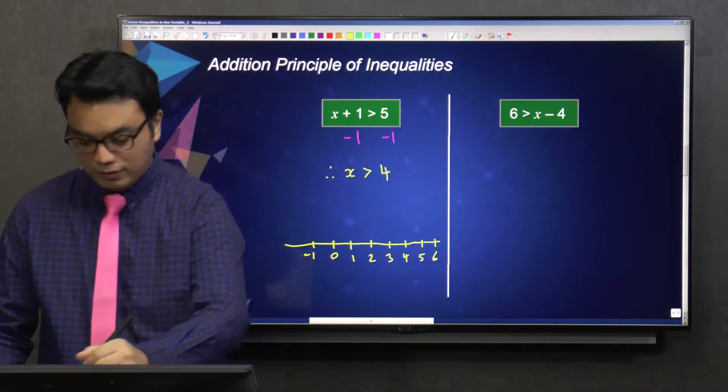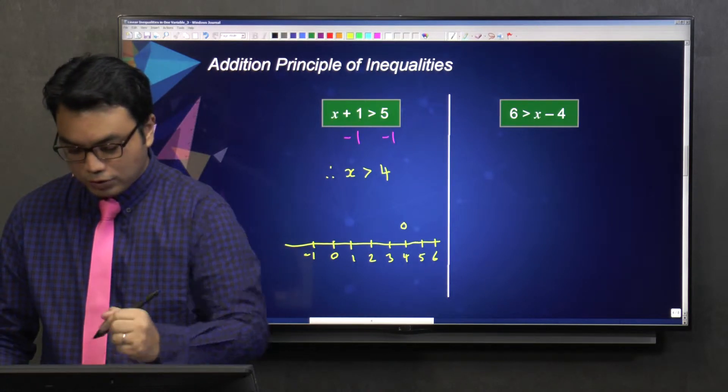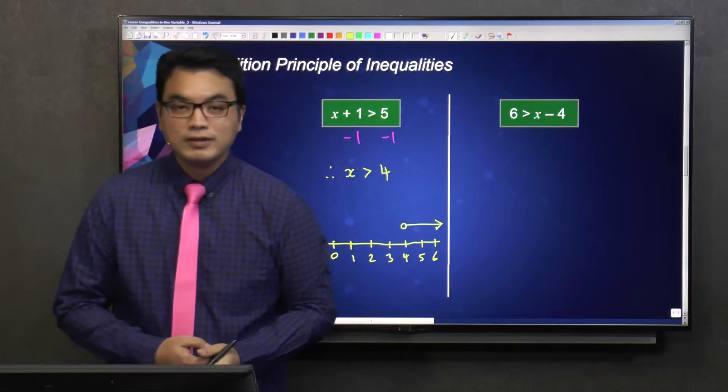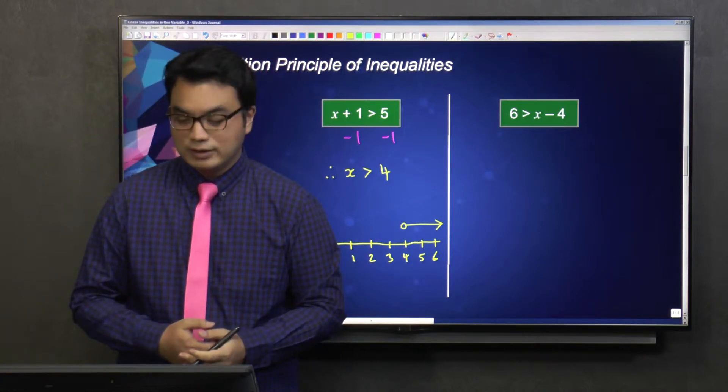So x greater than 4. Meaning I draw a hollow circle above 4 and an arrow pointing to the right. So this is how you illustrate.